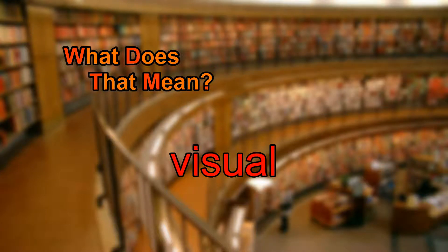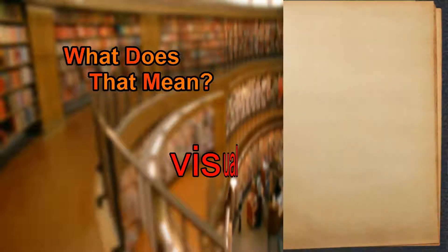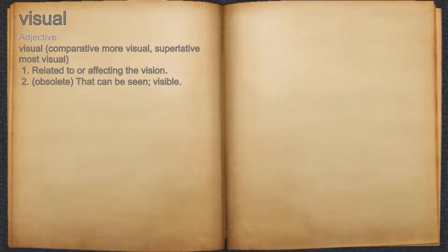What does visual mean? Visual. Adjective. 1. Related to or affecting the vision. 2. Obsolete, that can be seen, visible.